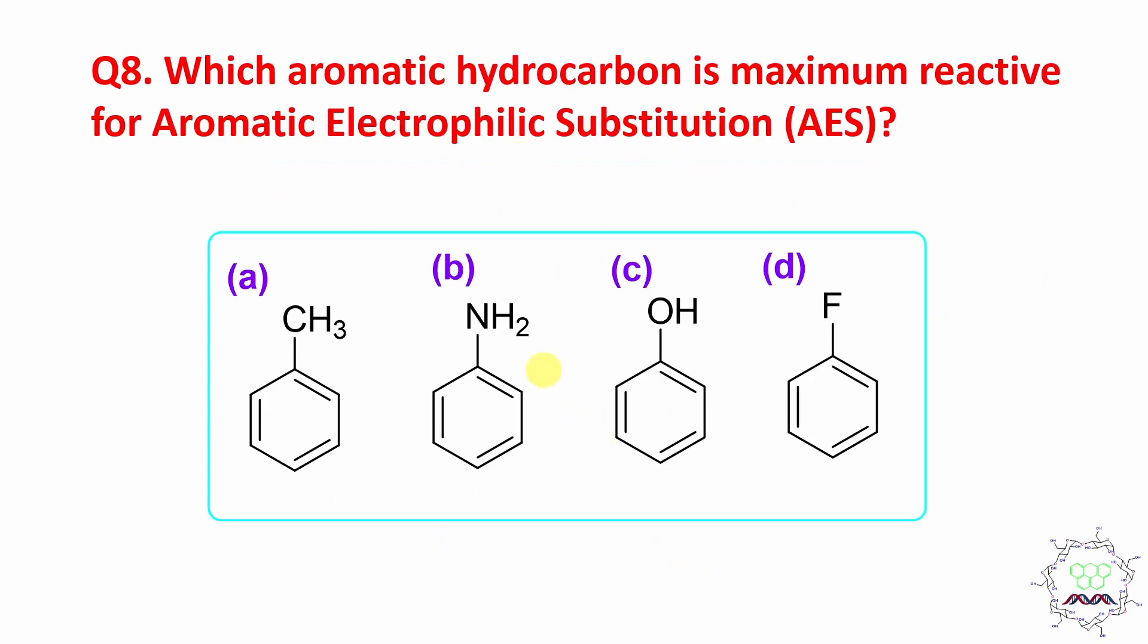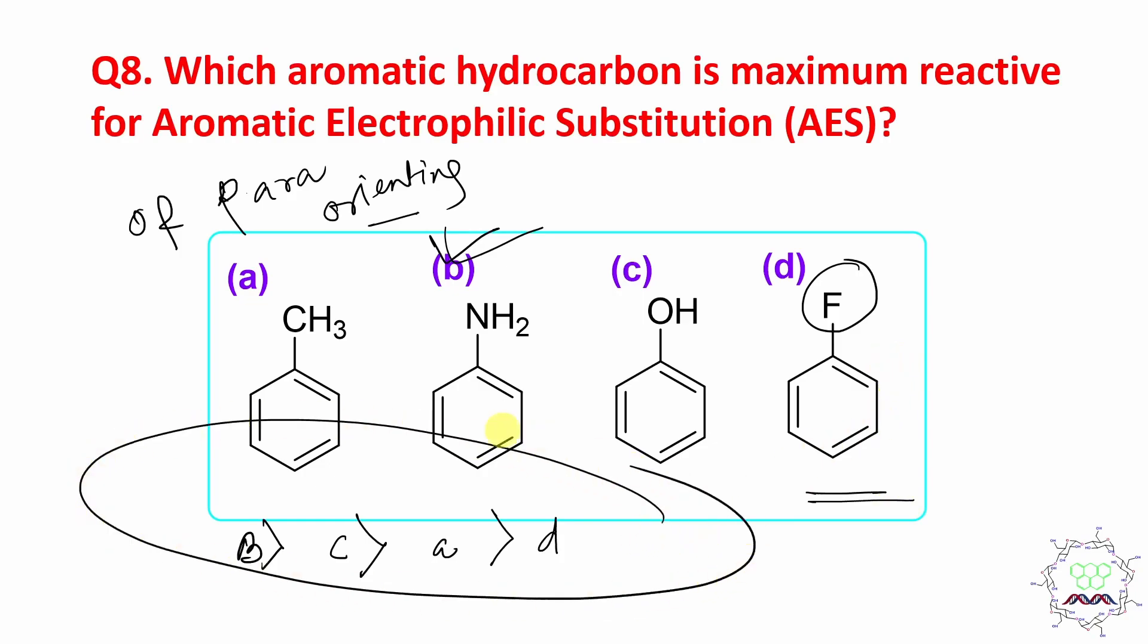Now, if it is asked what is the general trend - although it's not asked now - maximum will be B means aniline, second will be C I mean phenol, third will be A means toluene, and fourth is actually D, fluorobenzene. Why? Because these halogens are ortho-para orienting but deactivating. By the way, all are ortho and para orienting. This fluorobenzene is least reactive, least electron rich for aromatic electrophilic substitution, and this is the comparative reactivity for them.